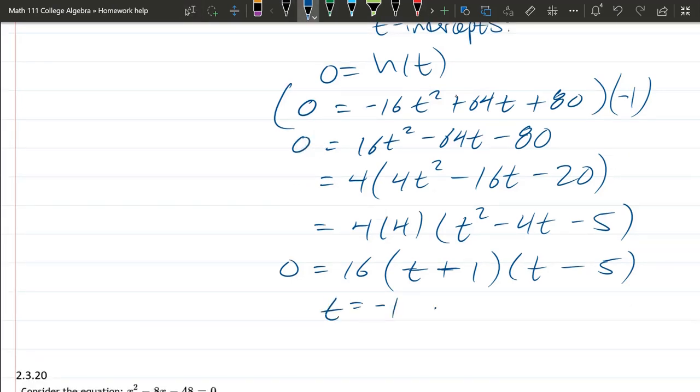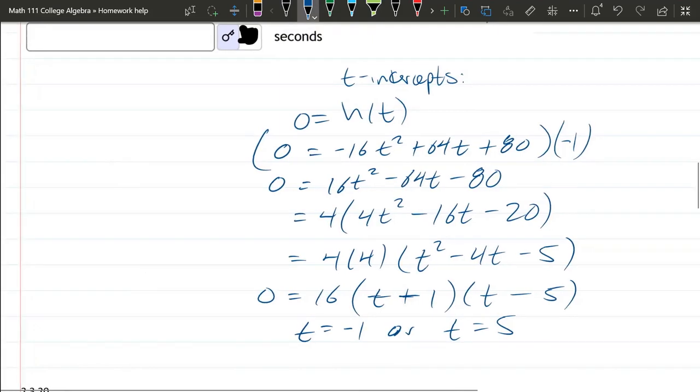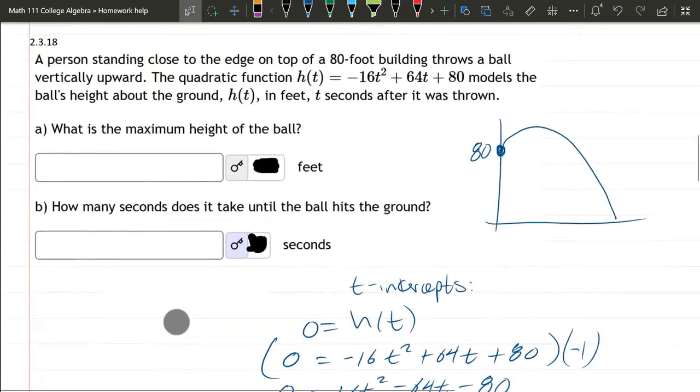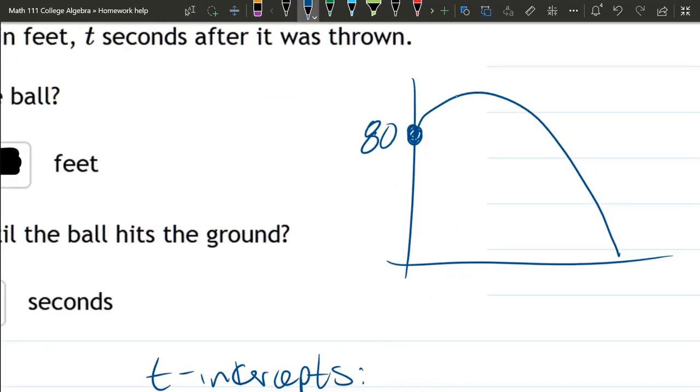So this means t equals negative 1 or t equals positive 5. Remember, it's the t value that zeros these factors out. So we get negative 1 and positive 5. Let's go to our graph above. So if I continue this down, there's our negative 1 intercept. Here's our positive 5 intercept.